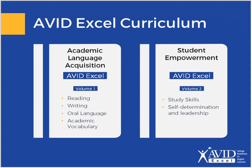Let's take a look at the curriculum and some of the instructional routines found in Avid Excel. There are online digital planning guides available for teachers, which include quarterly thematic units, key lesson plans, and pre-created anchor PowerPoints. All of these materials are tied to our Avid Excel curriculum, which is found in two volumes. Volume one is the academic language acquisition volume, which focuses on language and covers reading, writing, oral language, and academic vocabulary. Volume two is our student empowerment volume, which includes many familiar Avid strategies, all with a language development overlay.